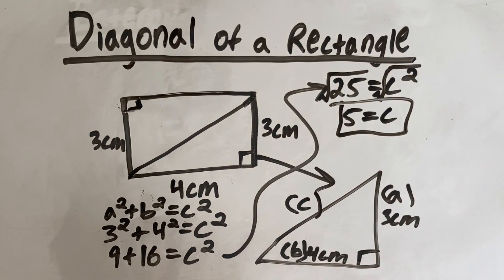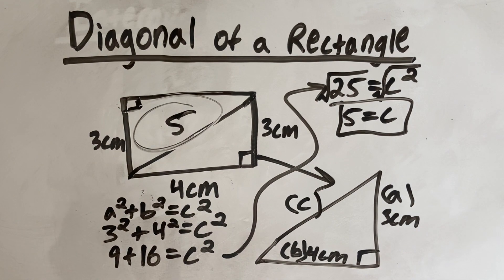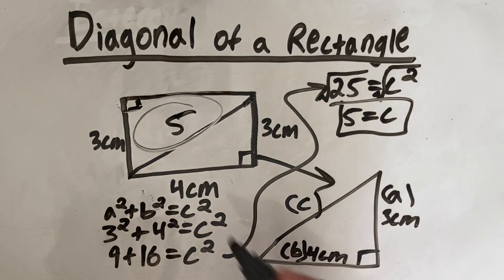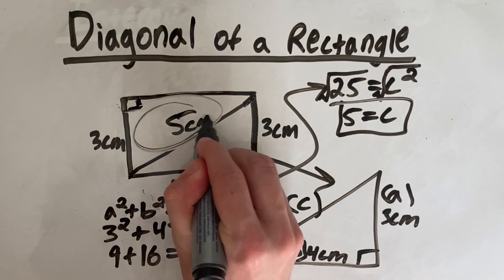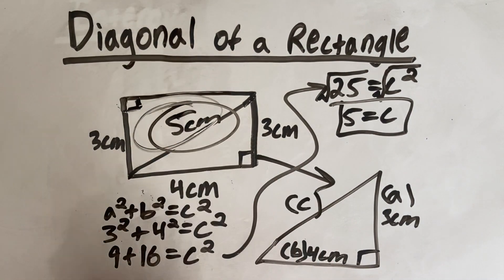So C equals 5, meaning that the diagonal of this rectangle is equal to 5 centimeters. So to summarize, we find the diagonal length of a rectangle using Pythagoras Theory. And that's our answer.